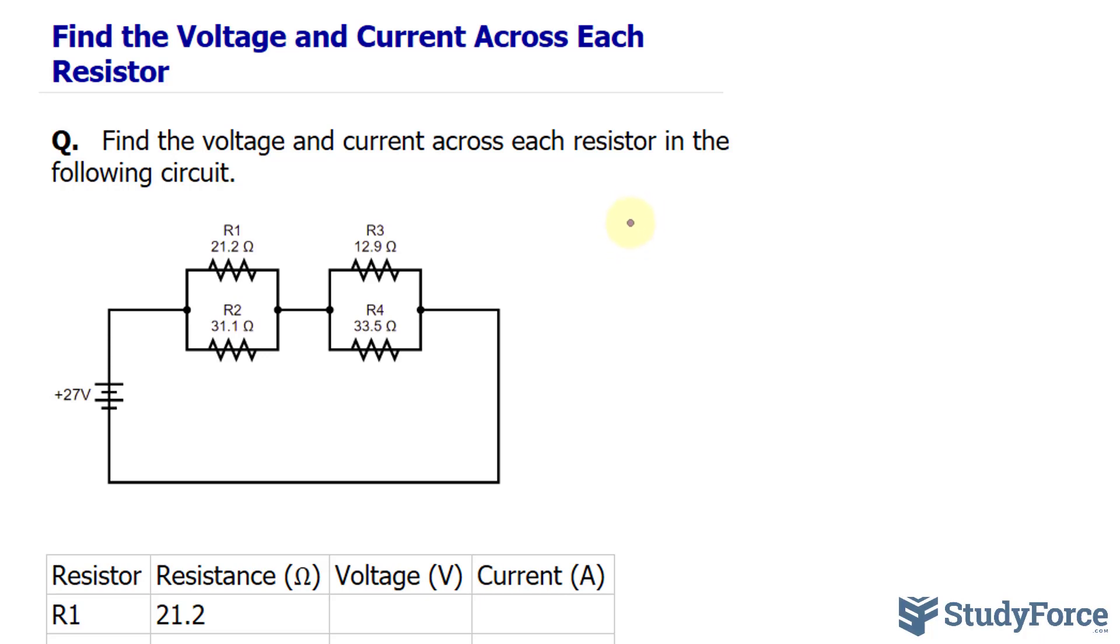And to find RA, we take 1 over RA, or the reciprocal of RA, and that's equal to the sum of the reciprocal of R1 and R2. That's written as 1 over R1 plus 1 over R2. Let's fill in R1 and R2 with their resistance, and that's provided over here.